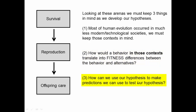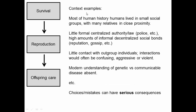Third, if we have a hypothesis, we want to do good science: take that hypothesis and make predictions that we can then test. We need to keep context in mind, make sure that any behavior we're thinking about translates into fitness differences, and use the hypothesis to make testable predictions.